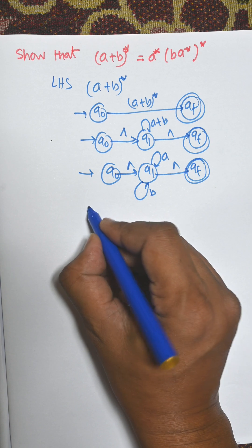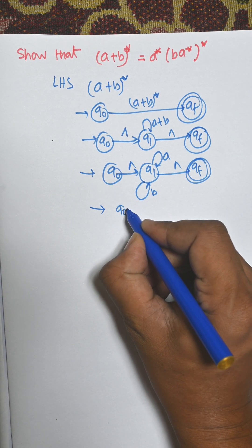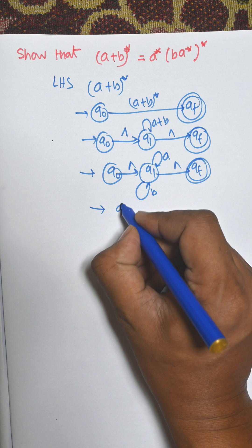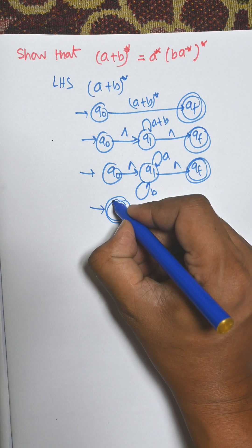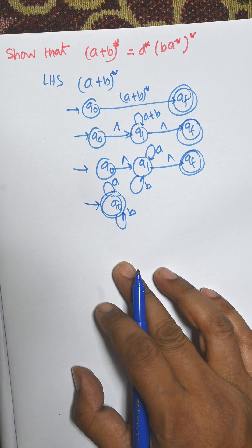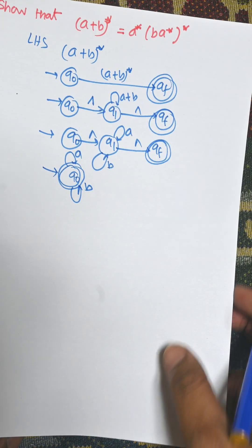Removing the empty symbol we will get only one state that is q0. You can write as q0 or either q1 or qf. I am choosing q0. So q0 as a final state and a and b will be the input of that final state. So this is the diagram for (a+b)*.